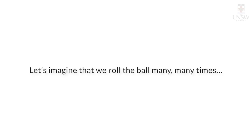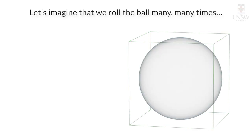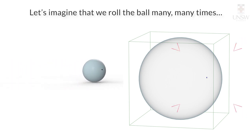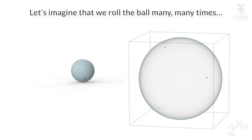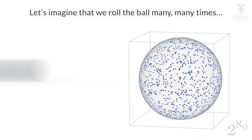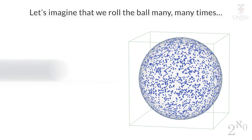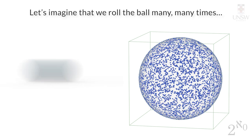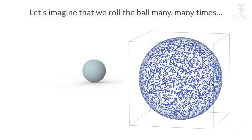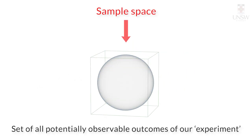To work this out, imagine that the ball is rolled many, many times. Theoretically, the dots will end up covering an infinite number of possible positions on the sphere. This infinite number of all possible positions or outcomes is what we define as our sample space. The surface of our hollow sphere represents our sample space.